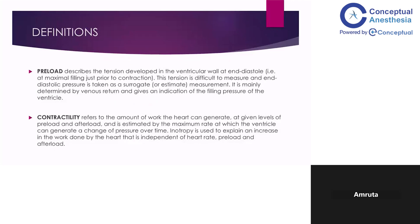Two key definitions: Preload is the tension developed in the ventricular wall at end-diastole, just prior to contraction. It is difficult to measure directly, and end-diastolic pressure is taken as a surrogate. The end-diastolic volume, which is responsible for that pressure, is what we look at for preload. It is mainly determined by venous return — it is the filling pressure of the ventricle.